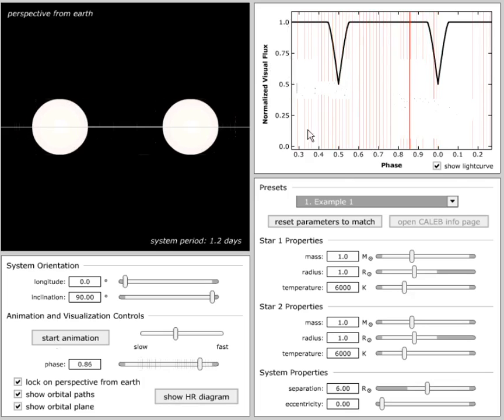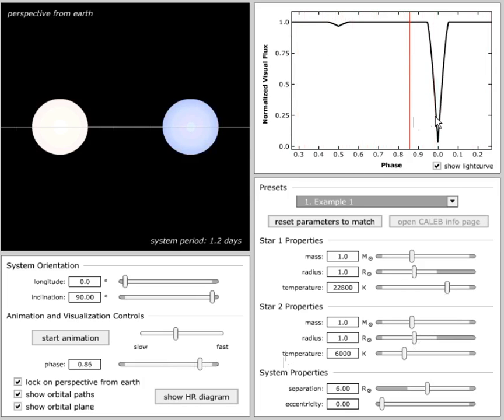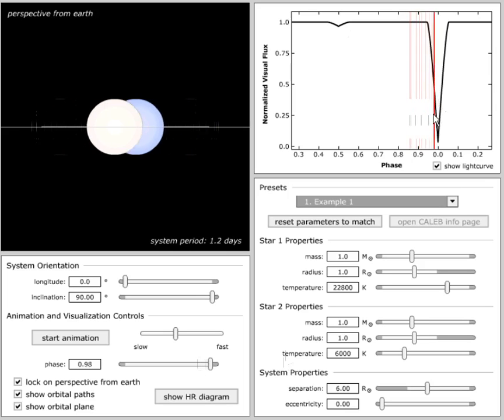Both of these stars are the same surface temperature. What would happen if we increase the surface temperature of star one? Okay, let's check that prediction. Our eclipses are no longer the same depth. What is happening when this deeper eclipse is occurring? Yes, the blue star is behind the orange star. So why is this eclipse deeper?